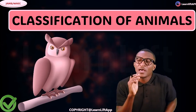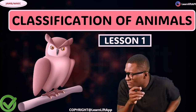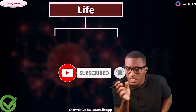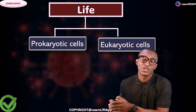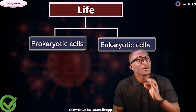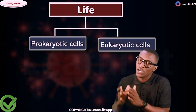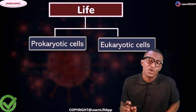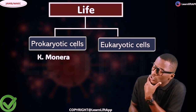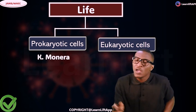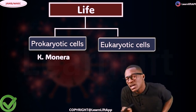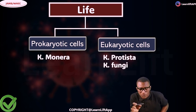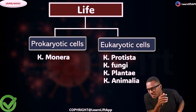For us to understand the evolution of animals, first let's go to the classification of animals. Let's go back to how life is classified. We said life is divided into either prokaryote or eukaryote. 'Pro' means first, 'karyon' talks about nucleus — so prokaryotes are the first organisms whose nucleus lacks a nuclear membrane. Examples are bacteria, under the kingdom Monera, which includes bacteria and blue-green algae, also called cyanobacteria. Under eukaryotes — 'eu' means through, 'karyon' means nucleus — these organisms have a nucleus with a nuclear membrane. Under this we have the kingdom Protista, kingdom Mycota (fungi), kingdom Plantae, and kingdom Animalia.